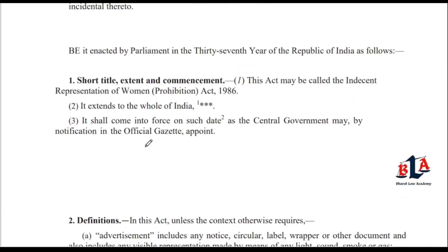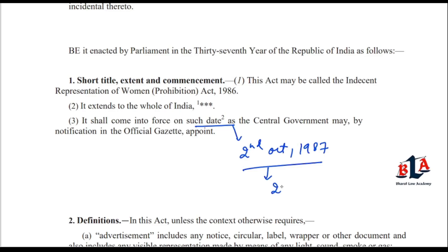Section No. 1: Short Title, Extent and Commencement. This Act may be called the Indecent Representation of Women Act 1986, and it extends to the whole of India. It shall come into force on such date as the Central Government may by notification in the official Gazette appoint — and that date was 2nd October 1987. When published, it was published on 25th September 1987.